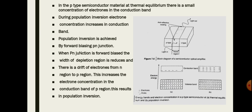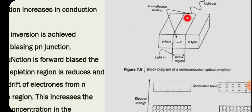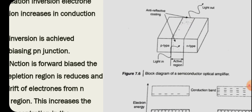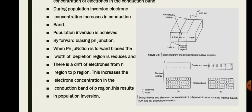The semiconductor optical amplifier is basically a P-N junction. The P-type and N-type materials form a junction that acts as the active region — specifically the depletion region formed between them. Light input is given to this active region, and the light traveling through it is amplified. Anti-reflective coating is provided at both ends of the active region to avoid ripples in the amplification process. Forward biasing of the P-N junction provides the pumping energy.